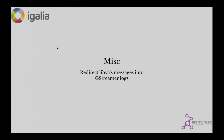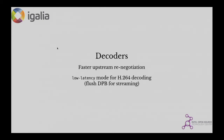We redirected the LibVA messages to the console into the GstVAPI logs, so we don't pollute the console anymore. In the decoders, we have faster upstream renegotiations — thanks to John. We also added a low latency mode for H.264 decoding, mostly for streaming. Cameras often stream non-conformant H.264 streams where the DPB buffer keeps increasing as required by the spec, but they don't want that — so we added this low latency mode to push the DPB as fast as possible.